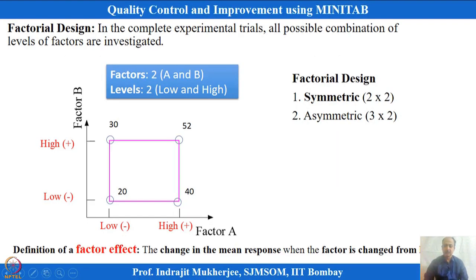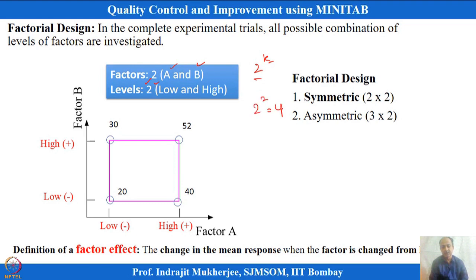In factorial experimentation, it is expected that we cover all combinations of factors. Here, one example has two factors A and B, each at two levels. The number of trials required is given by 2 to the power k — with two levels and k factors, this is a 2-square design, meaning 4 trials minimum. Experimentation is done at corner points.